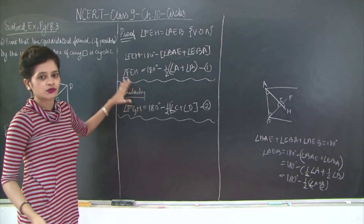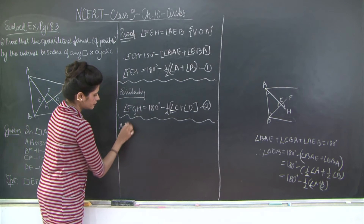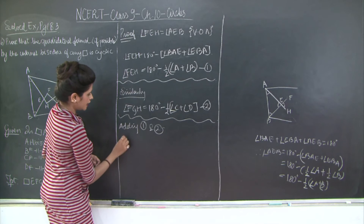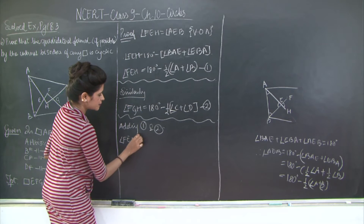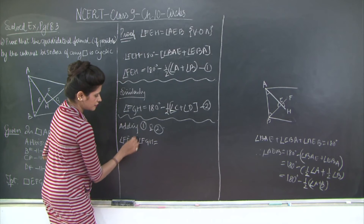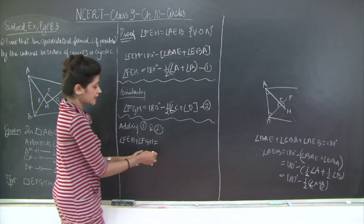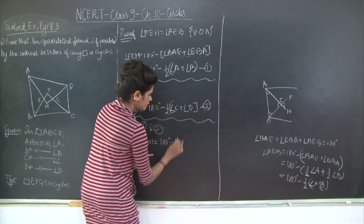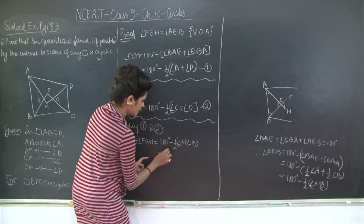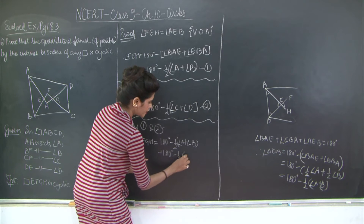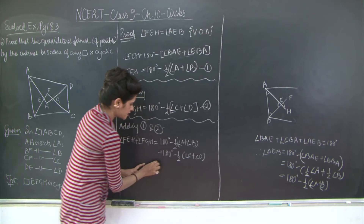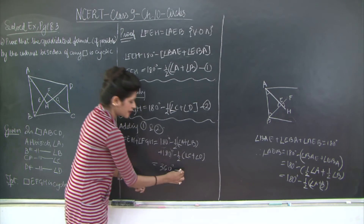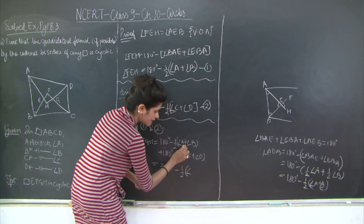Adding equations 1 and 2: angle FEH plus angle FGH equals 180 degrees minus half(A + B) plus 180 degrees minus half(C + D). We are adding because we need to prove the sum of opposite angles equals 180 degrees. This gives 360 degrees minus half of (angle A plus angle B plus angle C plus angle D).